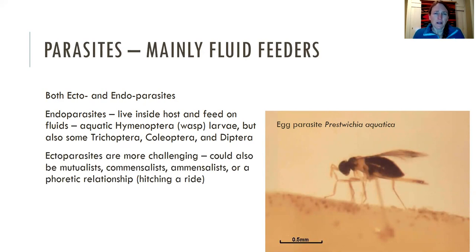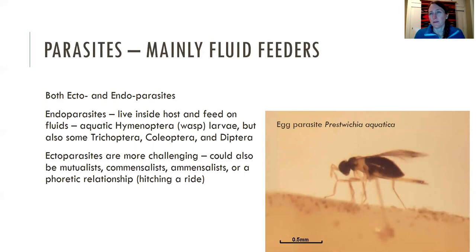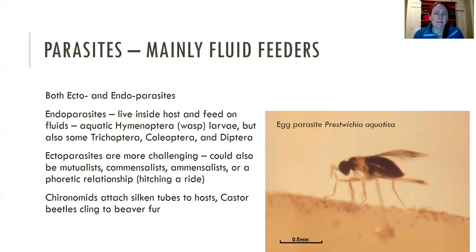Ectoparasites are a little bit more challenging to identify, partly because an organism could be parasitic, but there could also be a mutualistic relationship, or maybe it's just commensal or amensal, or it could even be a phoretic relationship, meaning they're just using someone else to hitch a ride. Chironomids will use silk tubes to attach to hosts and get a ride. Castor beetles will cling to beaver fur and catch a ride that way.